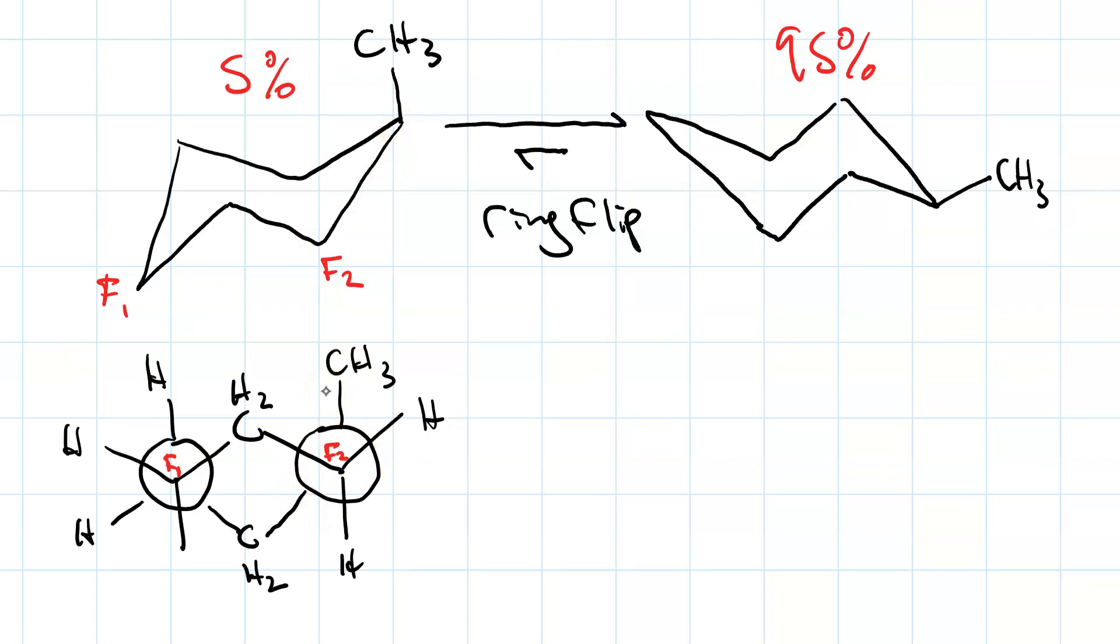Oh, and it looks like I forgot this hydrogen. In any case, you can see, there is a Gauche interaction there. Now, if we were to look down the same two bonds, that would be looking down this bond and this bond, we get another Newman projection.